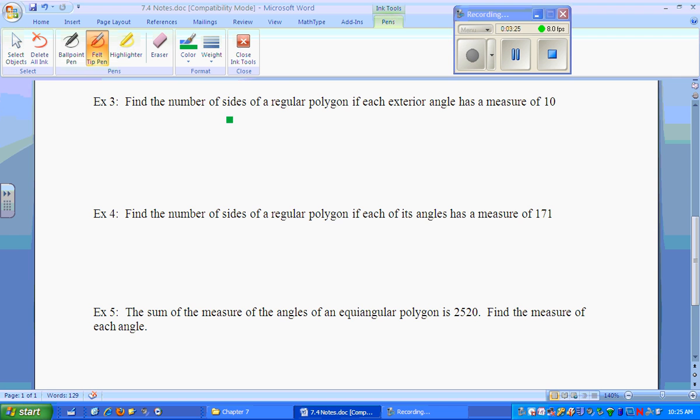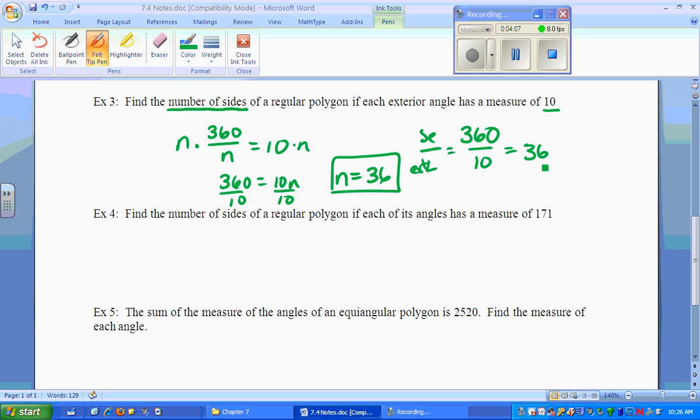Moving along. Number 3, find the number of sides of a regular polygon if the exterior angle is 10 degrees. So we know the exterior angle. Ultimately, we got 360 over N, and we have the answer. We multiply by N, so 360 equals 10N, divided by 10. Number of sides would be 36. Basically, you're taking the sum of the exterior, dividing by the exterior angle, equaling your total.